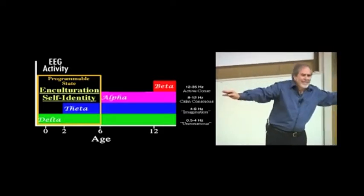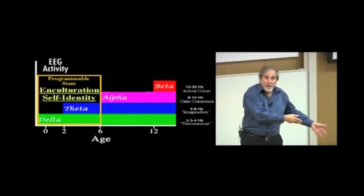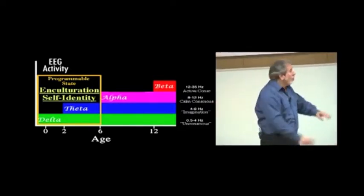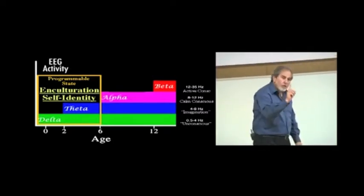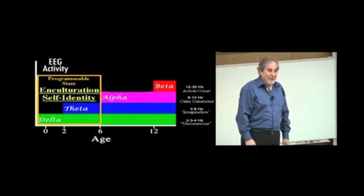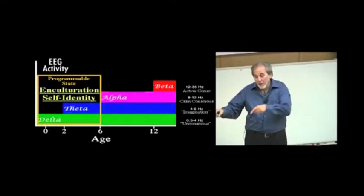A child is in a hypnotic trance for the first six years of its life. It downloads everything it sees and hears. You're thinking you're teaching a child? When you turn your back, your child is still recording everything you're doing. The child records everything without discrimination. You need consciousness to think about it, but you can't have consciousness unless you have data.